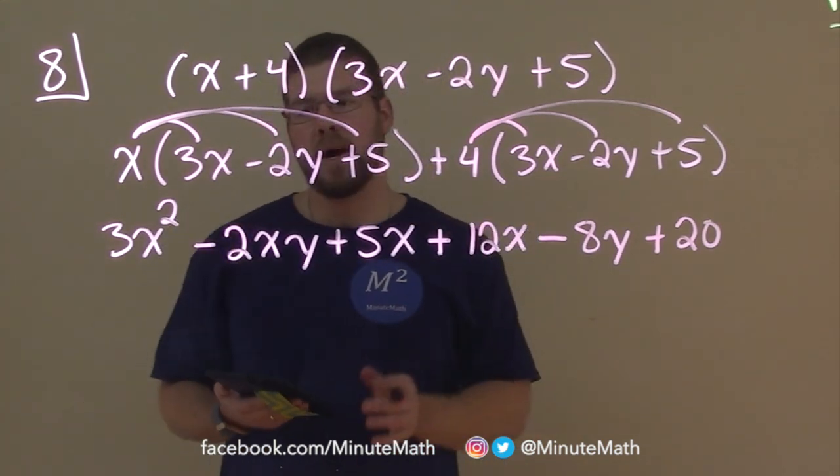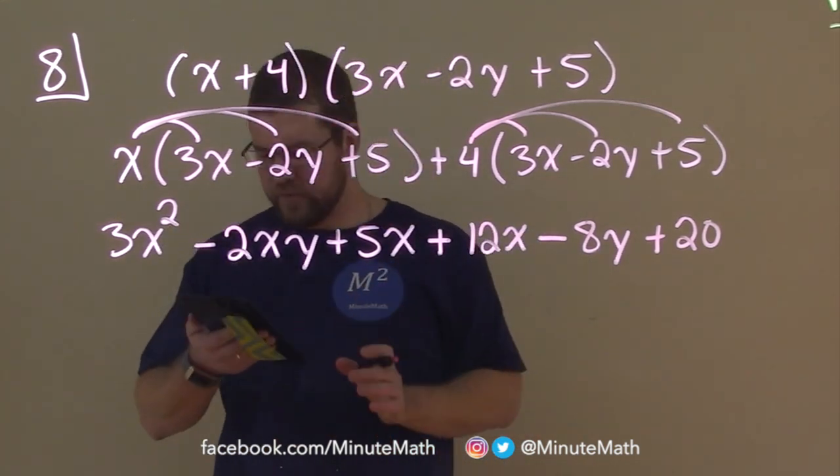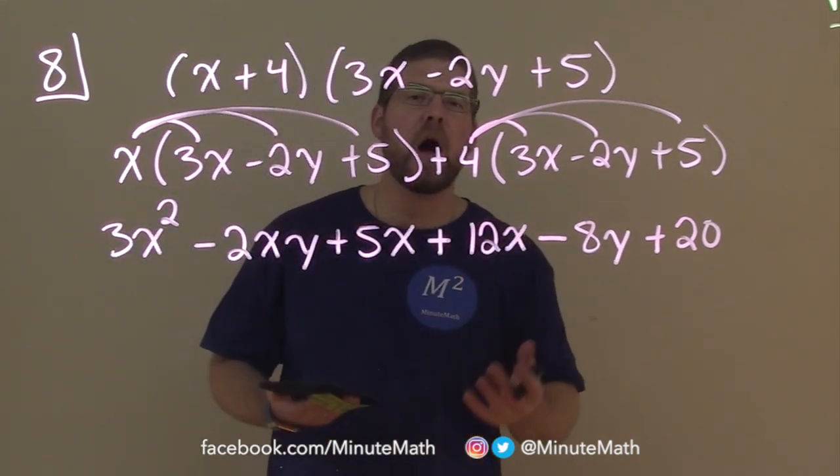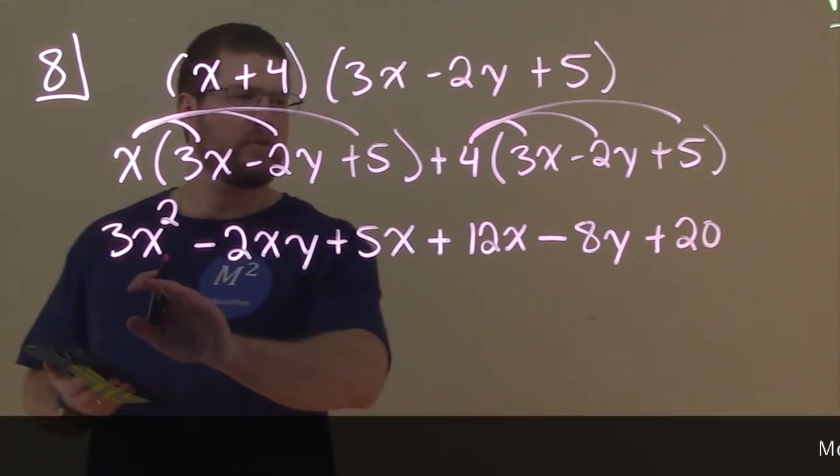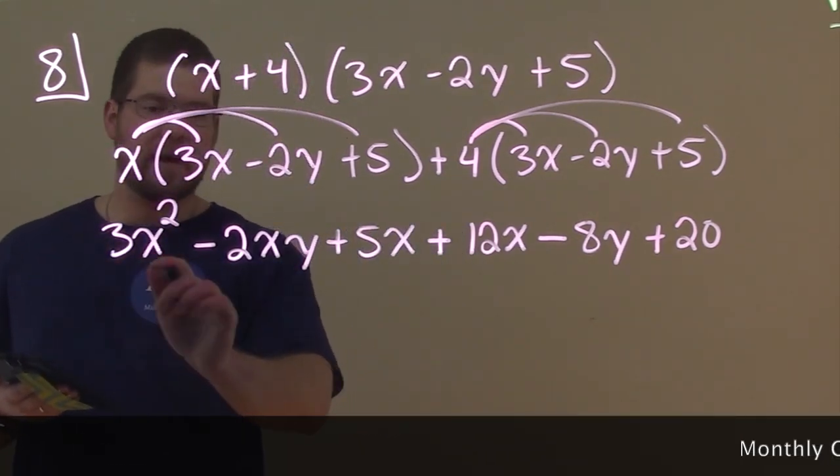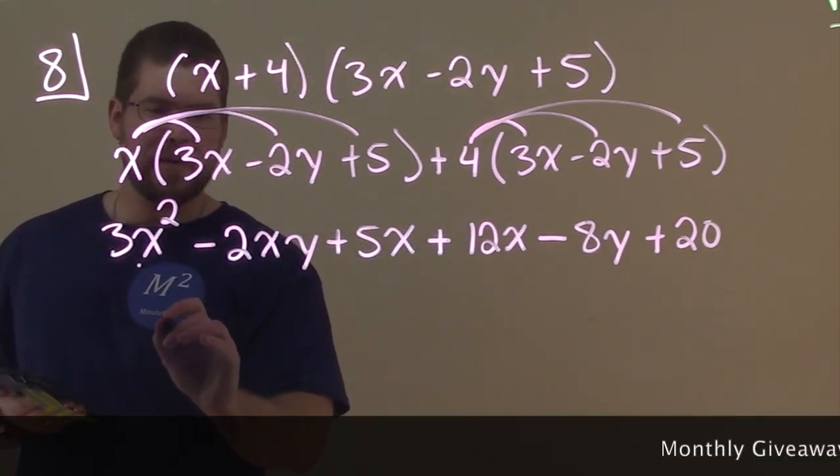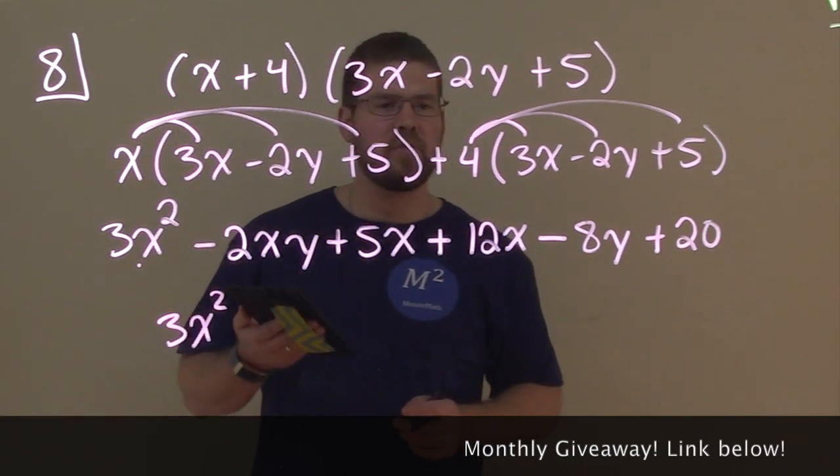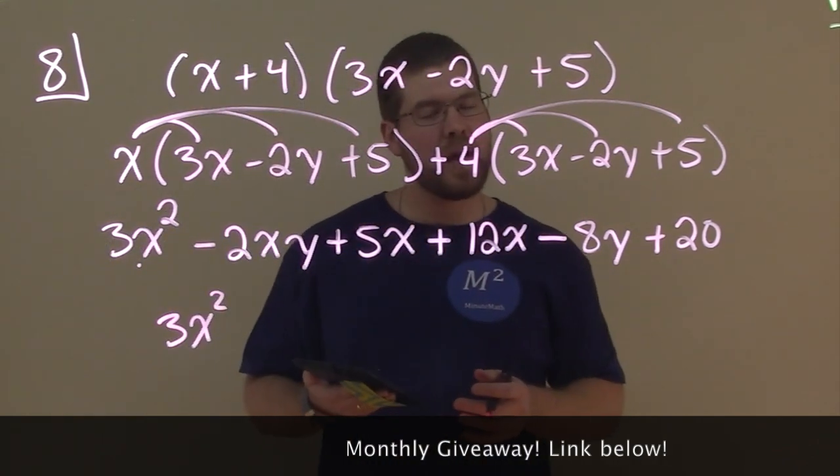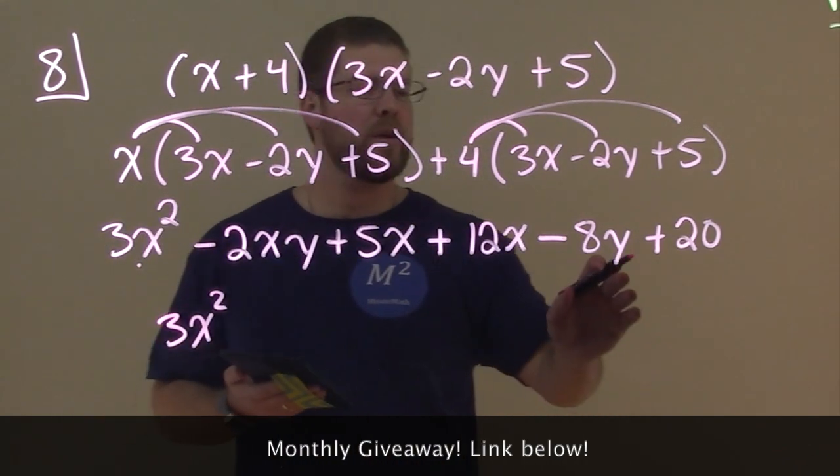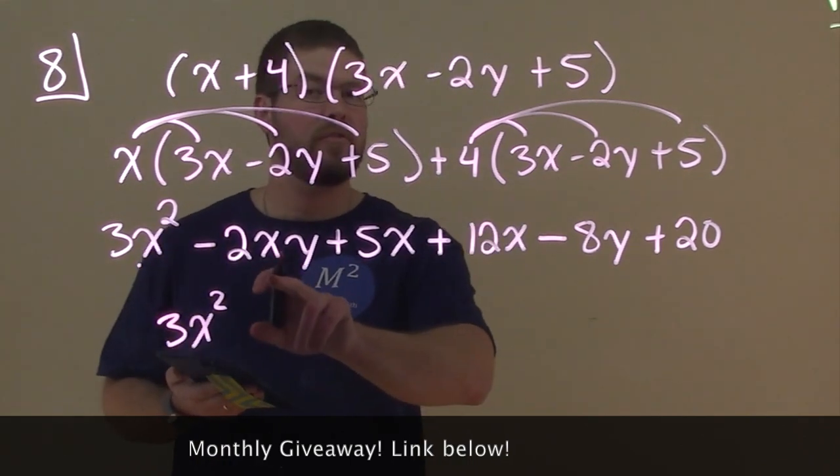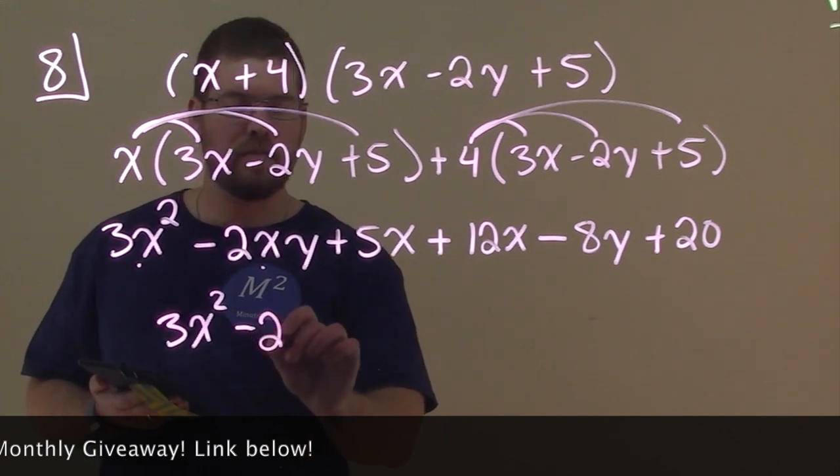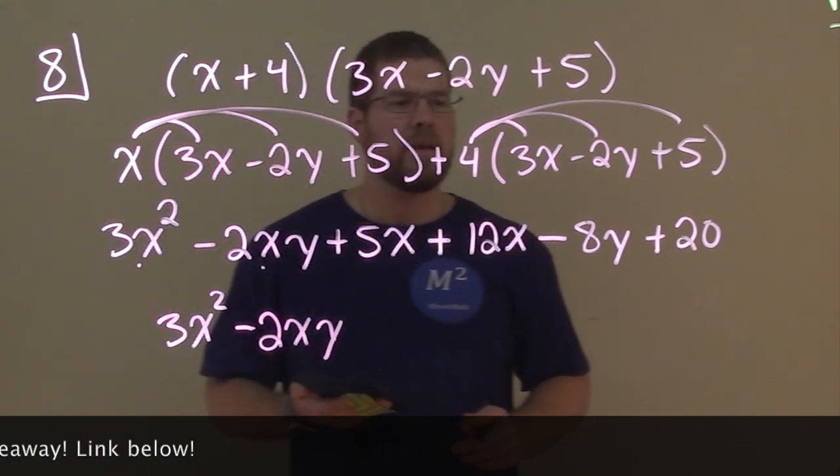So now we just want to combine our like terms. And I still generally like to follow having our highest degree first. That's the most common way of writing it and probably the nicest way. Highest degree is I see x to the second power. So we have a 3x squared, put a dot to show that I brought it down. And now we'll see the next ones. I like to put the xys together now, since there's no other high degree. So xys, essentially there's two variables here, and there's only one of them that have xys, so we're going to bring that down, minus 2xy here.